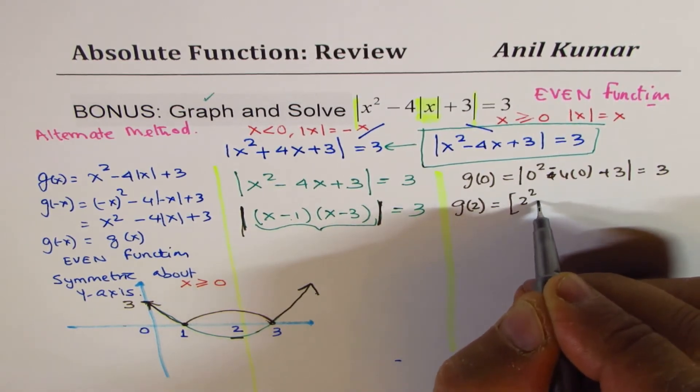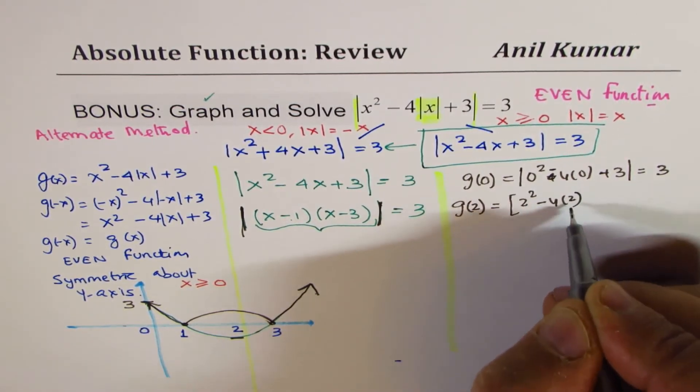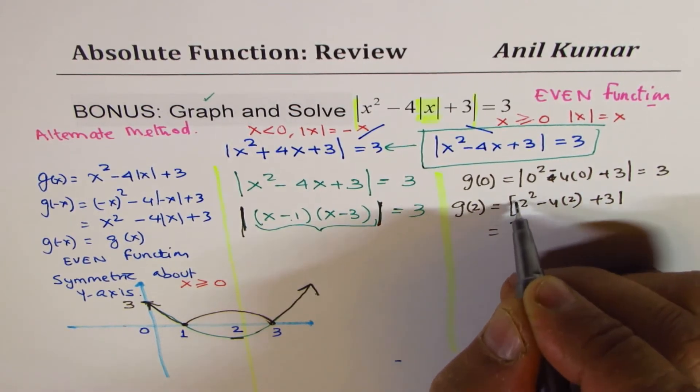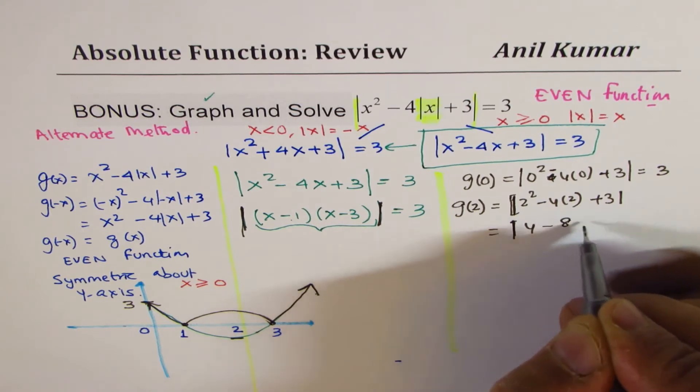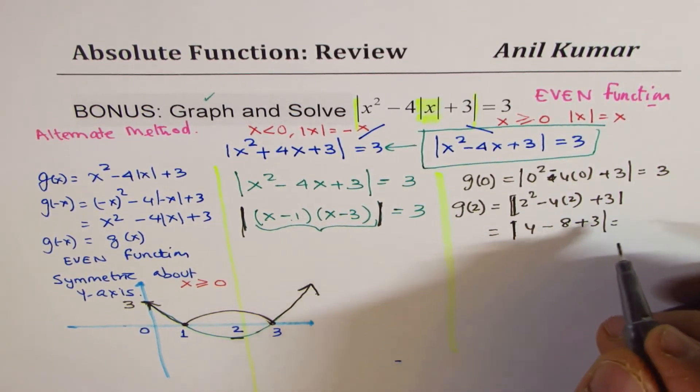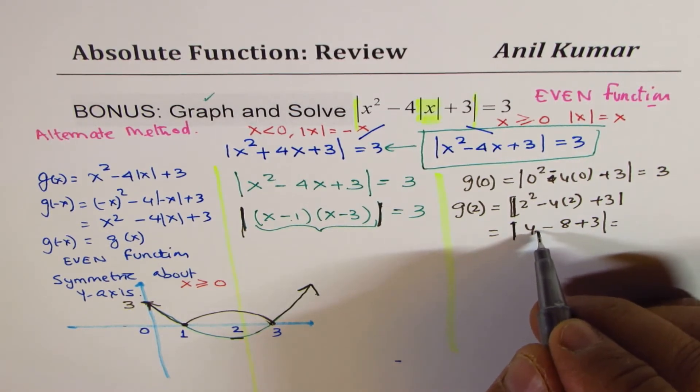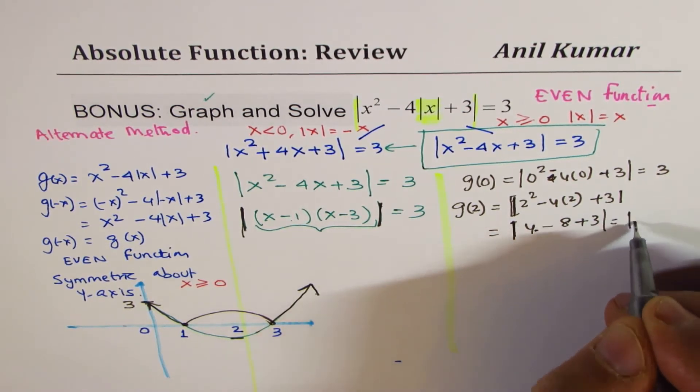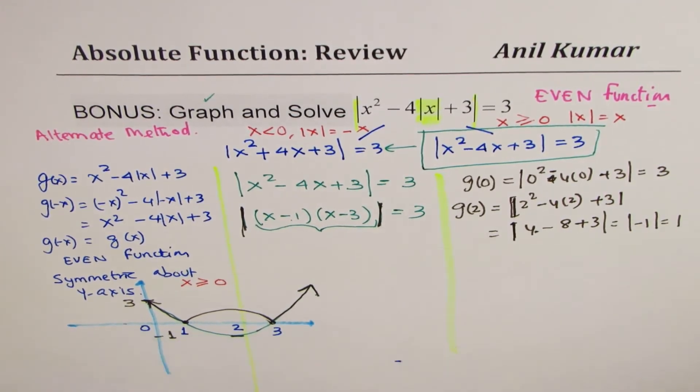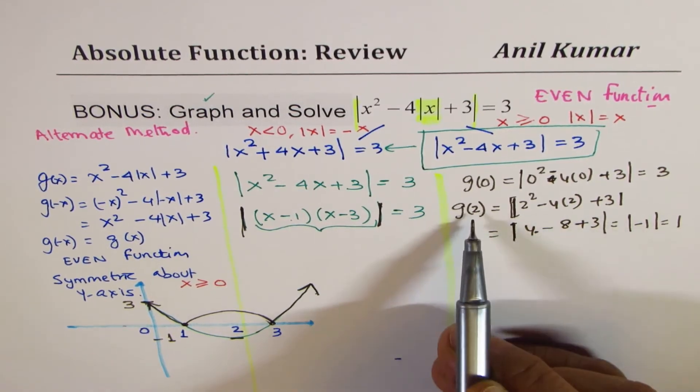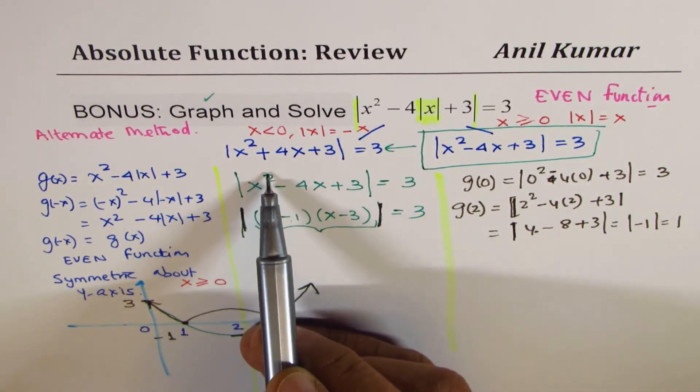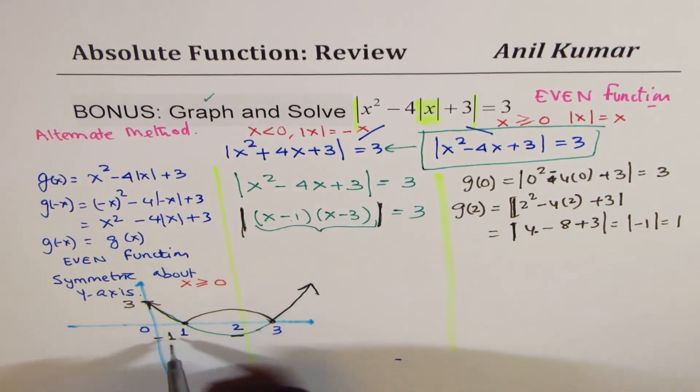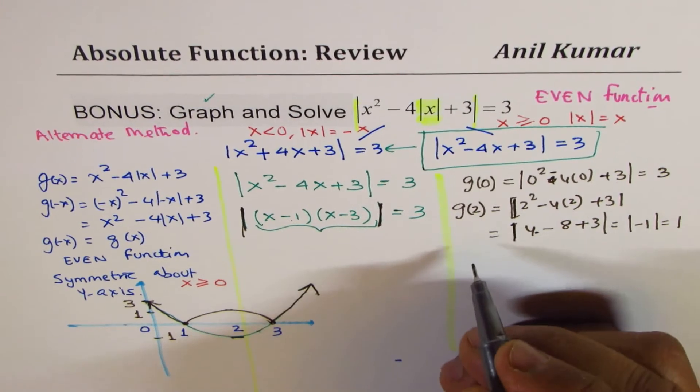Good. So, what is g of 2? So, if I substitute 2 here, I get 2 squared minus 4 times 2, absolute value is positive, plus 3. Now, that is equal to absolute value of 4 minus 8 plus 3, which is 4 minus 8 is minus 4. So, minus 4 plus 3 is minus 1, which is 1. So, this value is 1 for us. So, if I substitute 2, which is the mid value, so 2 squared is 4, and this is minus 8. So, minus 4 plus 3 is minus 1. So, we get just 1. And if I reflect it, I'll get 1 here.